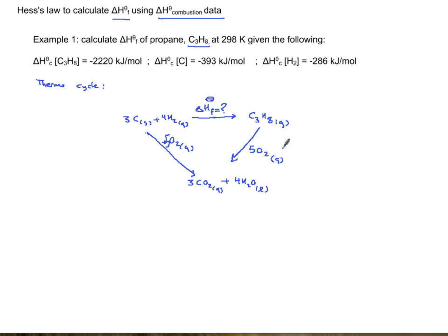Now let's just see what are these arrows. This arrow here is delta H combustion of propane C3H8. And this one in red, this side, is three delta H combustion of carbon because you have a coefficient of three, plus four delta H combustion of H2.